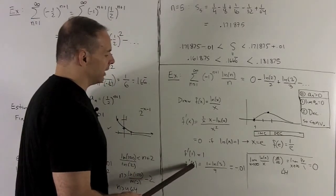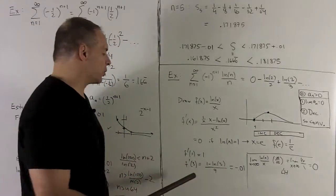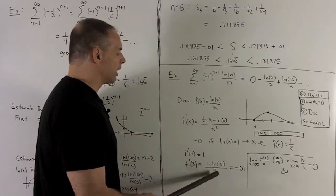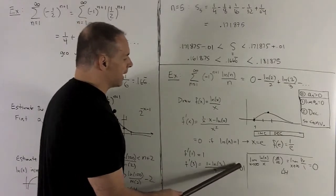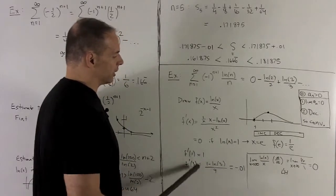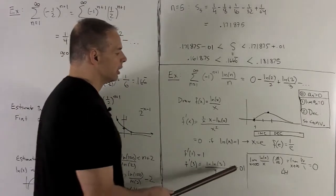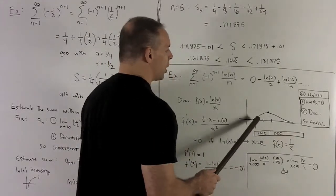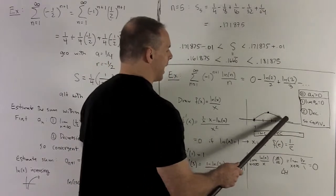I take a point past e. e is 2.7. So, why don't we go with 3? That's going to give me 1 minus natural log of 3 over 9. And that's going to be roughly minus 0.01. You're going to need to go to a calculator for this guy. All right. So, that's going to say I'm decreasing here. And so, we already see we're going up and then back down.